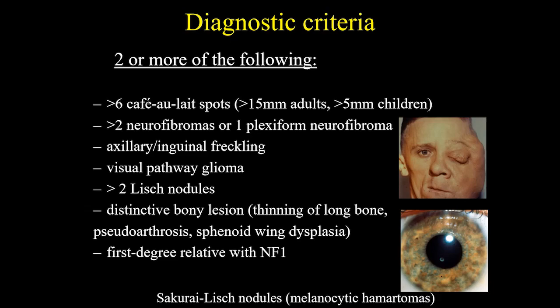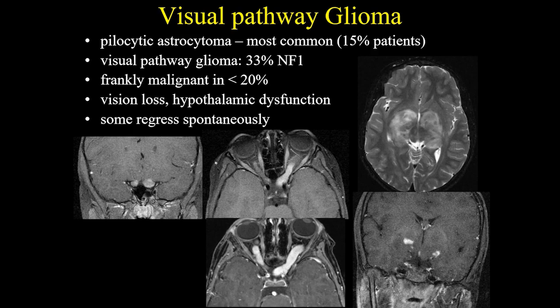In the diagnostic criteria for NF1, you need to have two or more of the following: more than six café au lait spots larger than 15 mm in adults and 5 mm in children; more than two neurofibromas or one plexiform neurofibroma; axillary and inguinal freckling; visual pathway glioma; more than two Lisch nodules; distinct bone lesion; and a first-degree relative with NF1. Pilocytic astrocytoma is the most common visual pathway glioma and corresponds to 15% of patients. Visual pathway gliomas are found in one third of NF1 patients, but are frankly malignant in less than 20% of cases.